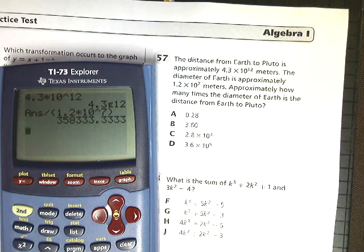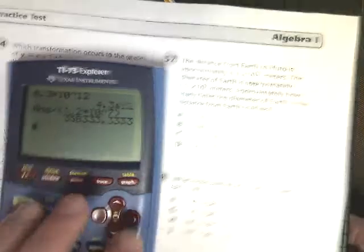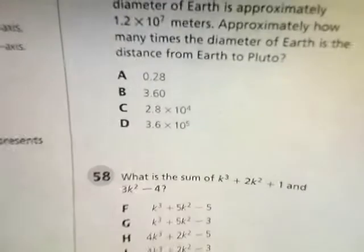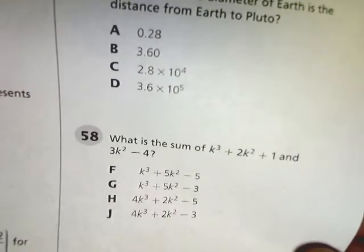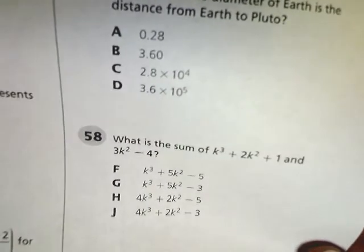Now, I get this number, and it's still none of the real answers that I can get. 3.6 looks pretty good, but this is way more than 3.6. And I've got 2.8 times 10 to the 4th, or 2.8, or 0.28, or 3.6 times 10 to the 5th.